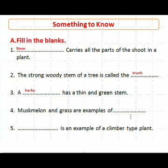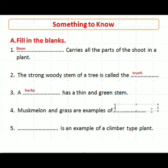Next question: Musk, millet and grass are examples of blank. Musk, millet and grass — what type of plant is this? The answer is creeper — C-R-E-E-P-E-R.